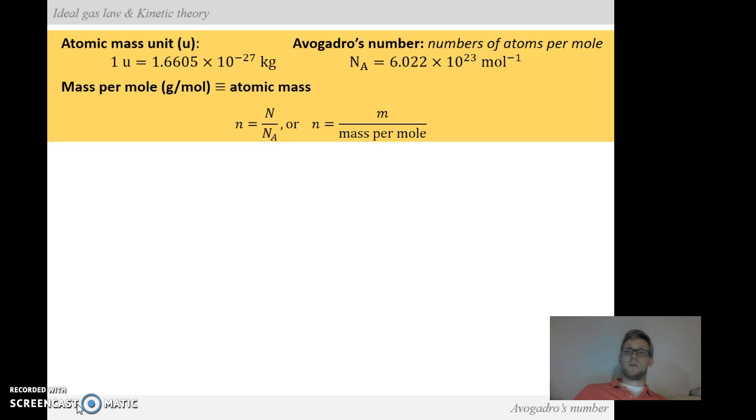Then we have Avogadro's number, which is very important, and it defines the number of atoms per mole. And we write that as capital N with a capital sub A, and that's 6.022 times 10 to the 23rd atoms per mole. It doesn't matter what substance we're talking about, but each mole has that many atoms per mole.